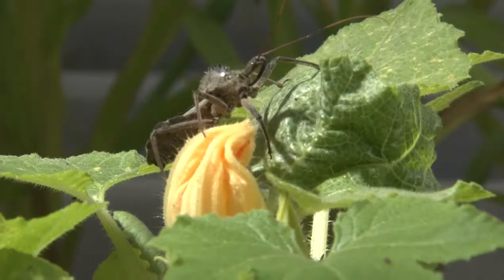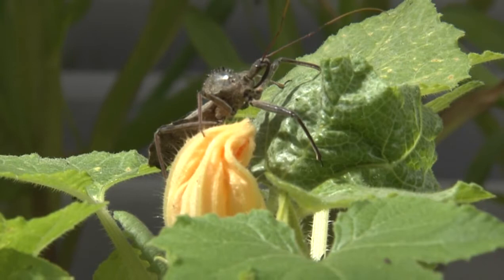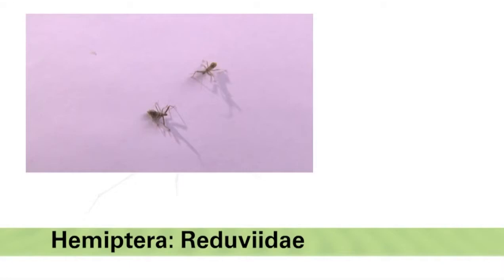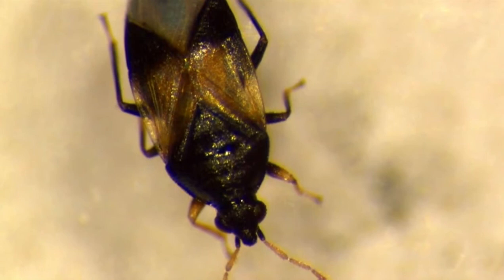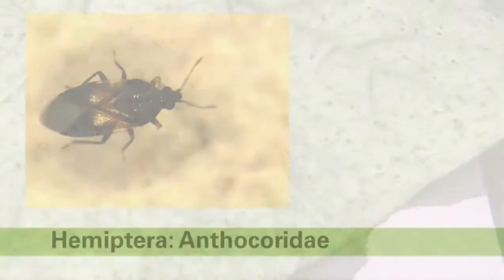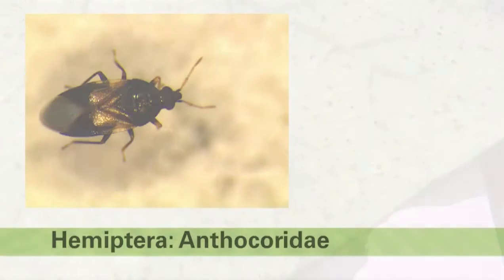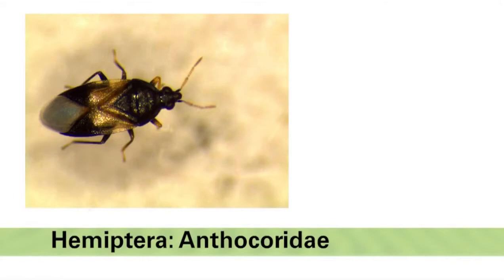Wheel bugs get their name from the half-circle of spines on their thorax. Nymphs resemble adults but are smaller with undeveloped wings. Assassin bugs are voracious predators as both nymphs and adults, and feed on caterpillars, leafhoppers, moths, beetles, and many other soft-bodied insects found in most vegetable crops. Another important true bug is the insidious flower bug, also known as the minute pirate bug. These predators are in the family Anthocoridae and are small, about a tenth of an inch in length. The adults have black and white patches of color on their wings. Minute pirate bugs feed on a number of small prey, including insect eggs, spider mites, thrips, aphids, and small caterpillars.